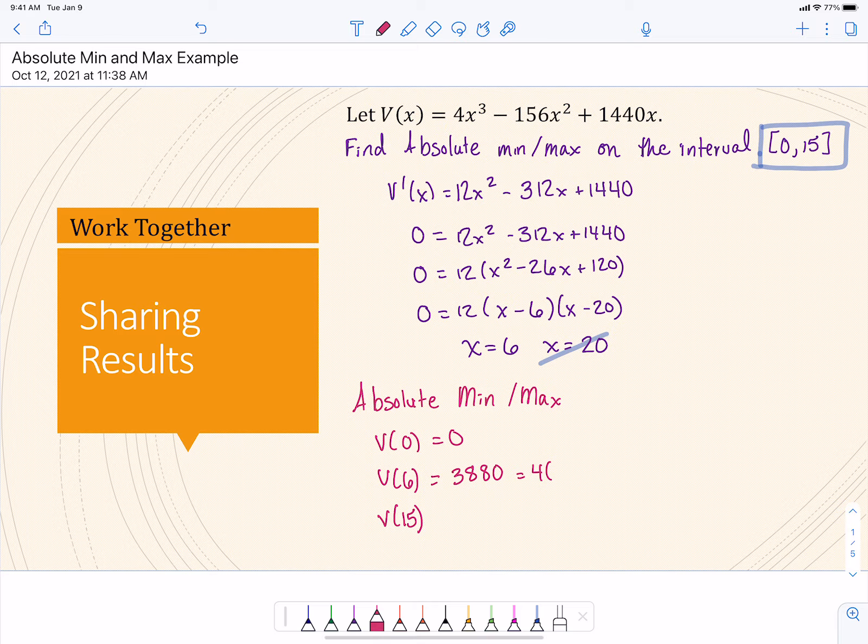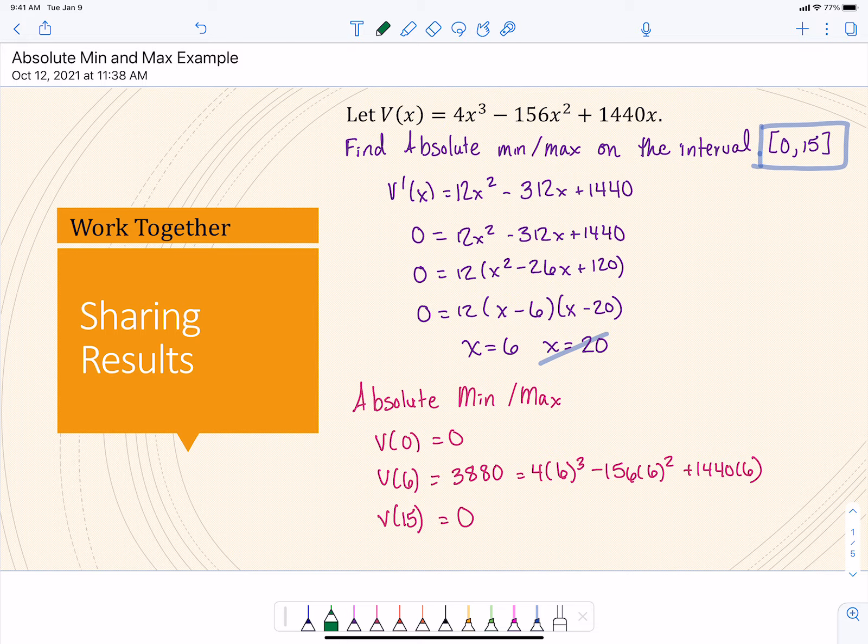And again, here we're literally plugging six into the original equation, not into the derivative. If you plug it into the derivative, you'll get zero. We're trying to see what the actual output is at that value. So we're evaluating that. And then when you plug in 15, you also get zero. So what we've learned here is that here is our absolute min at zero. We have another absolute min at 15. And then we have an absolute max at six.